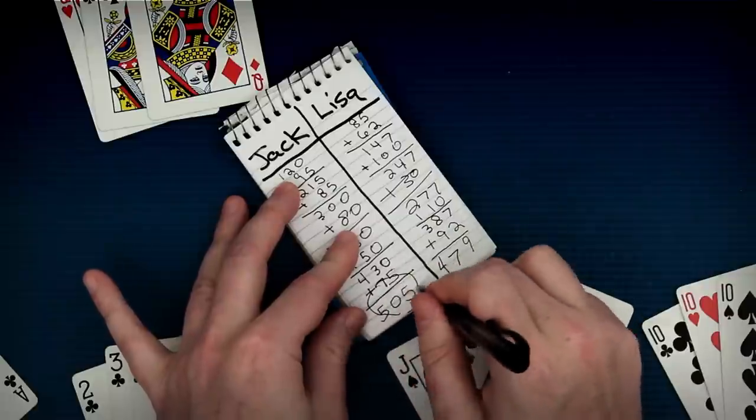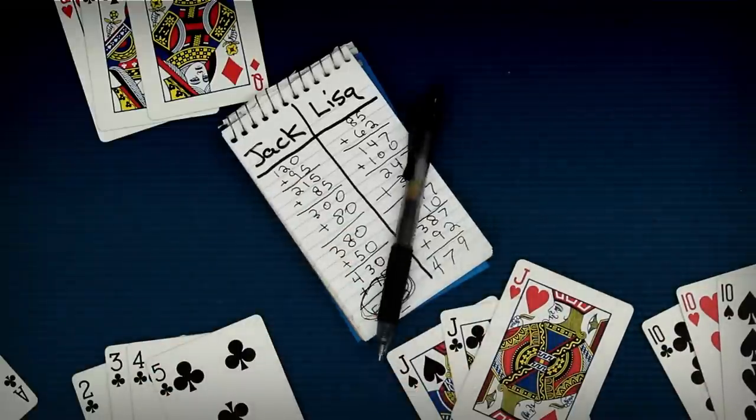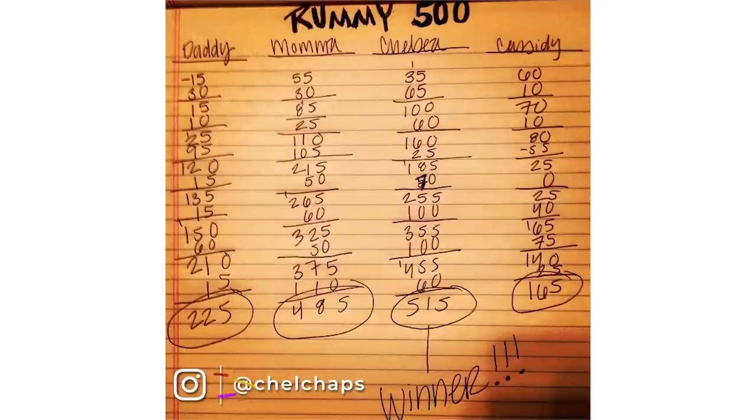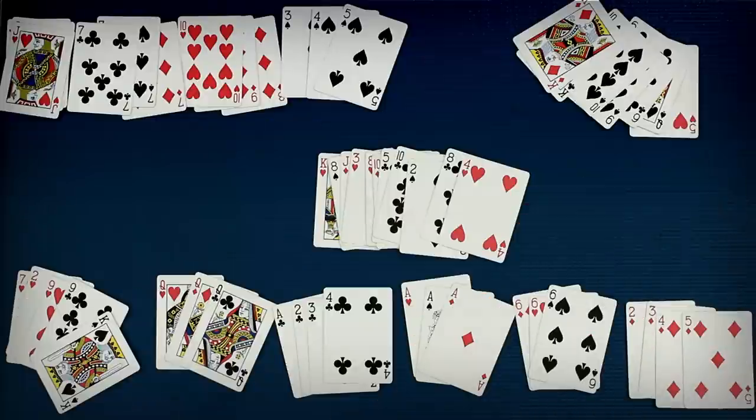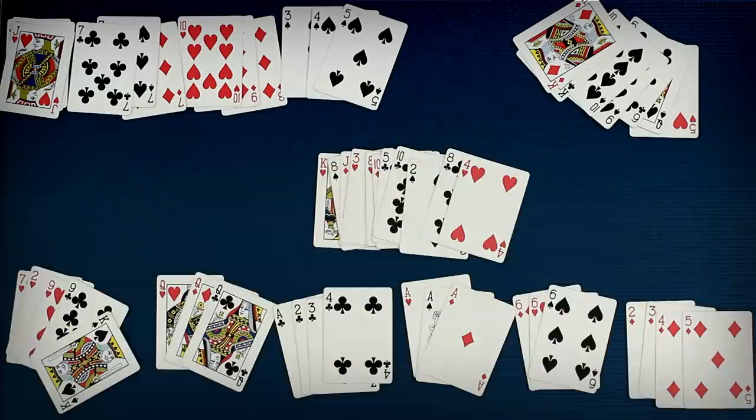You keep playing hands until someone has 500 points. If you're the first person to get 500 points, or if multiple people in the round with 500 and you have the most points, that means you've won Rummy 500. Congratulations!